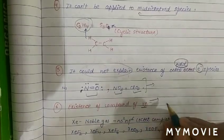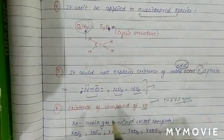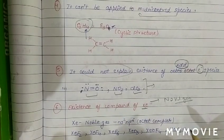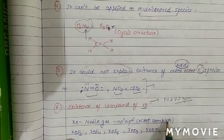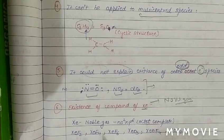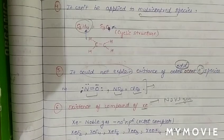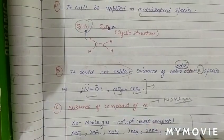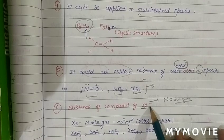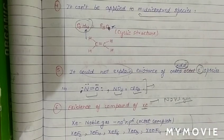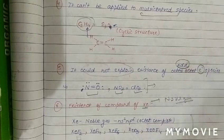The next drawback is the existence of xenon compounds. Xenon is a noble gas with configuration ns²np⁶ — a complete octet. Yet xenon forms compounds with fluorine and oxygen such as XeF2, XeF4, XeF6, XeO3, XeO4, and XeO2F2. The formation of these compounds was not explained by Lewis theory.